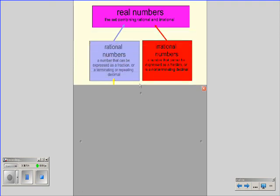Those two sets, the rational and irrational. Rational numbers being a number that can be expressed as a fraction or a terminating or repeating decimal. And irrational numbers, a number that cannot be expressed as a fraction or as a non-terminating decimal. I really think of irrational numbers as being those kind of ugly numbers, those numbers that never end, never repeat. The most famous being pi.